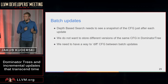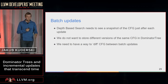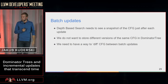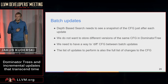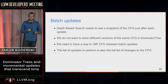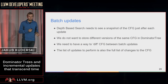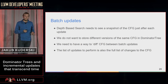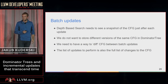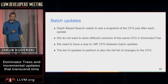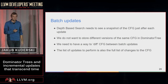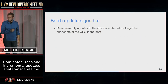We need to find a way to diff the CFG between two updates. It turns out that the list of dominator tree updates is the diff of the CFG — you are passing the things that changed, and this is the change. It seems pretty obvious, but it was not obvious to me at first.